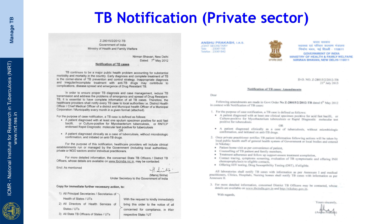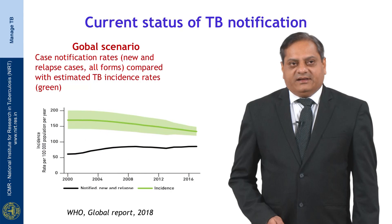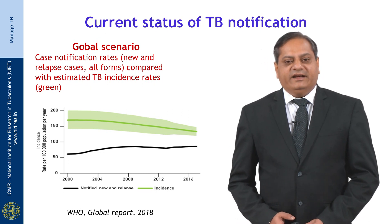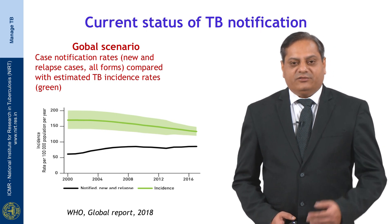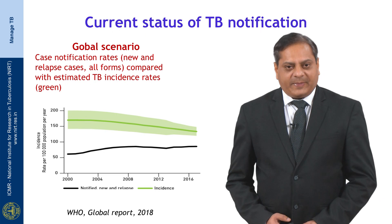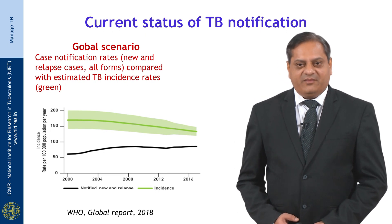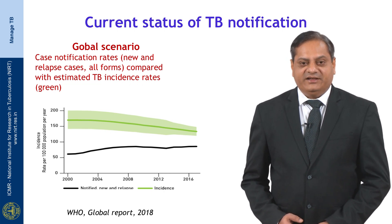On 7th May 2012, a TB notification order was issued by the central government, making it mandatory for all laboratories, practitioners, and hospitals that either diagnose or treat TB to notify the nodal officers at the district level. Globally and in India, there is a gap between the total notification rate and the expected incidence. Globally the incidence rate is going down while notification was stationary, but recently in the last 3-4 years the notification rate has increased, as we can see on the left side.